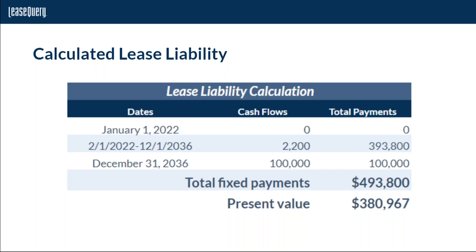If you're not using the present value calculator, you can discount the various payment streams individually and add them together. Using the present value formula in Excel, we arrive at the same total of $380,967 as the present value of the $493,800 in total payments.